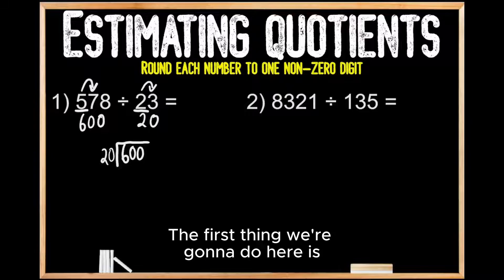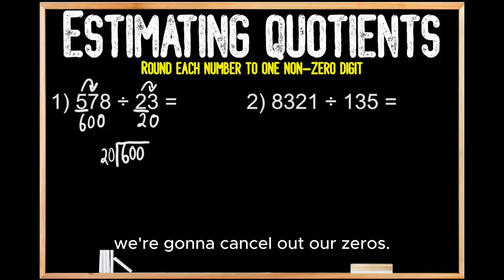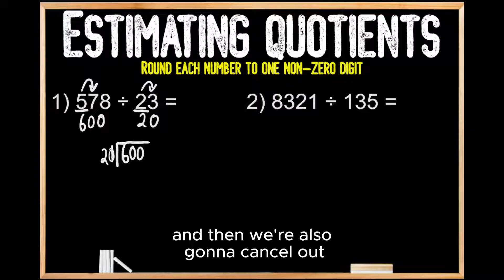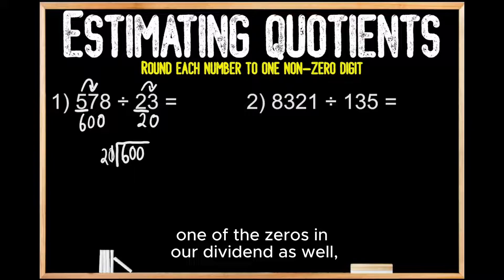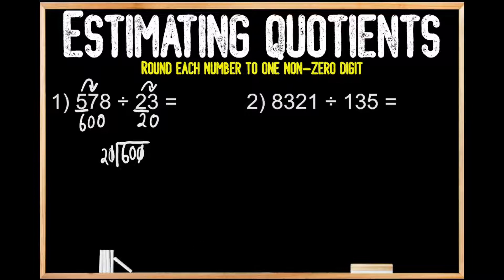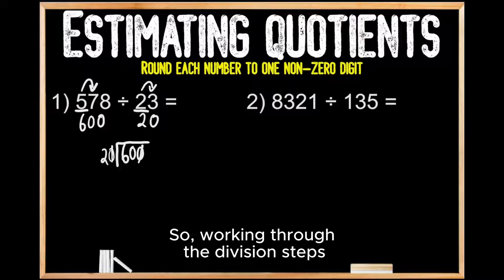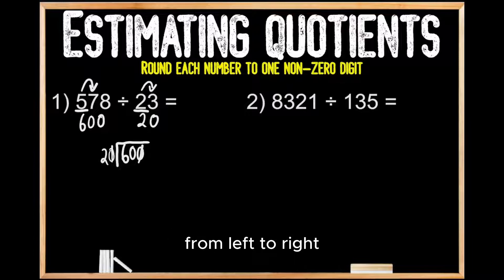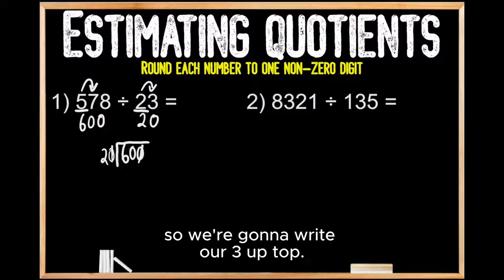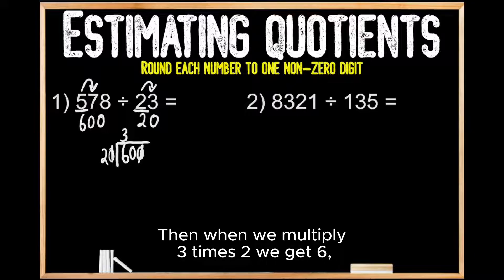The first thing we're going to do here is cancel out our zeros. In our divisor we have one zero, and then we're also going to cancel out one of the zeros in our dividend as well. So now we're going to be dividing 60 by 2. Working through the division steps from left to right, we can make three equal groups of 2 out of 6, so we're going to write our 3 up top.